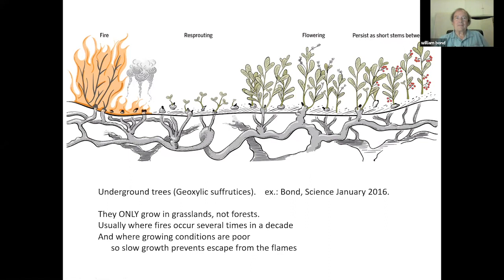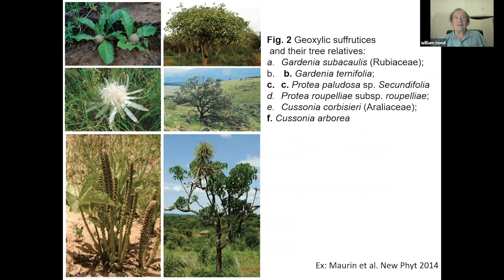Here are some examples: this is an underground Gardenia — imagine holding onto that trunk and pulling hard until just the leaves stick up above the soil. Here's an underground Protea. My favorite is the underground Cabbage Tree — here's a magnificent old Cabbage Tree, and through evolutionary time someone grabbed the trunk and pulled and pulled until just the tips of the leaves and fruiting shoots poke above the soil. All underground trees have a close relative that is an ordinary tree.